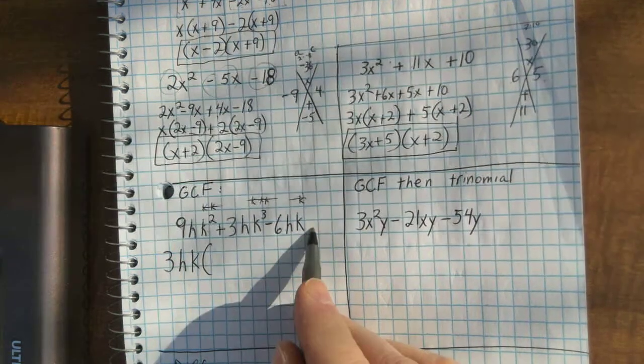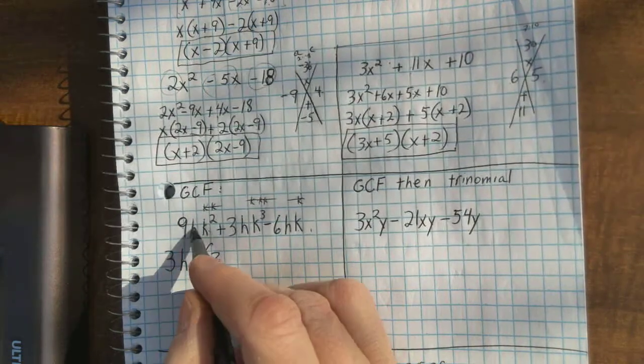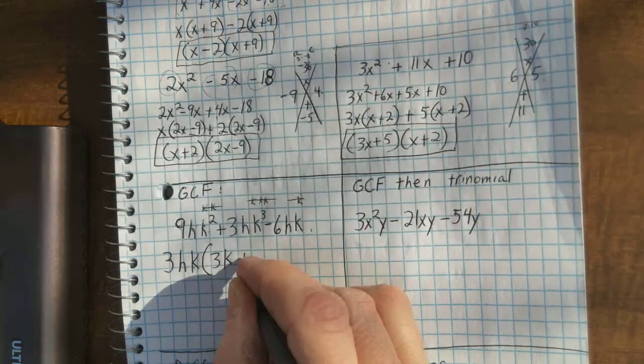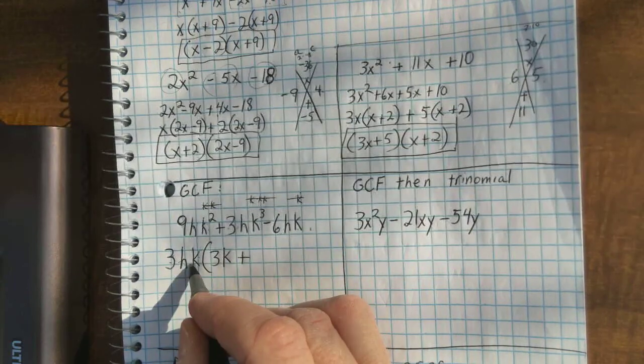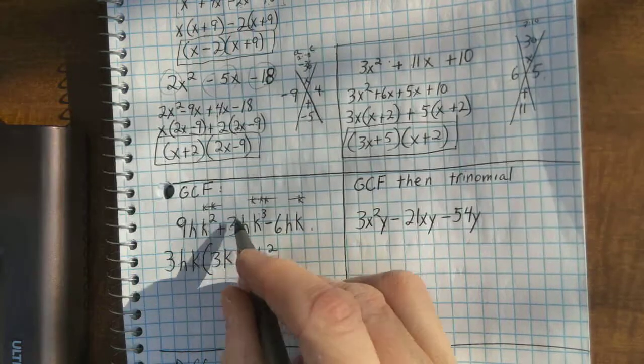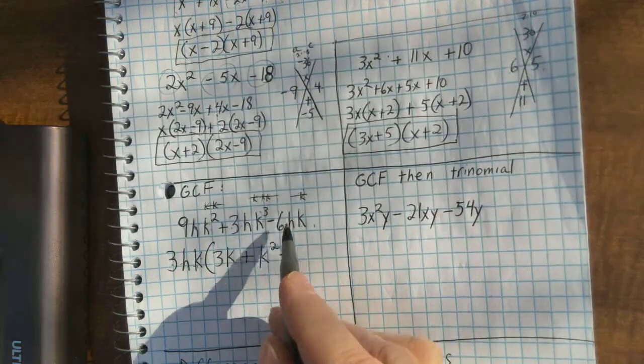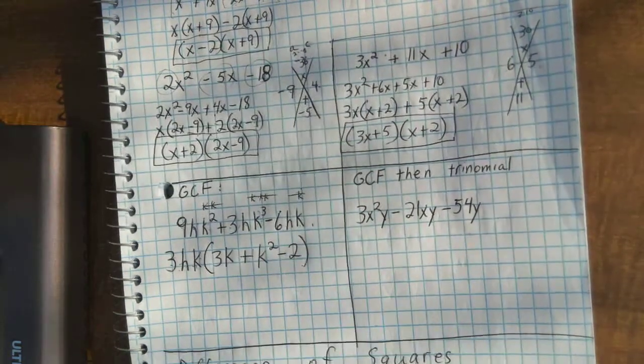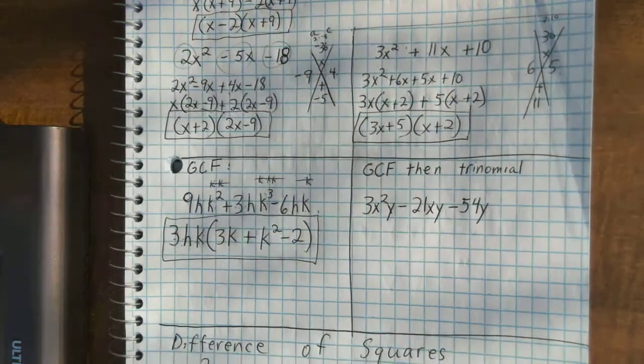9, 3 times 3. I've got the H here. I need another K for K squared. Now, this term, I have the three already. I have the H already. I need K to the second power to get 3HK to the third. And this one, I'll need a negative because this is negative. And 3 times negative 2. And that will about do it.